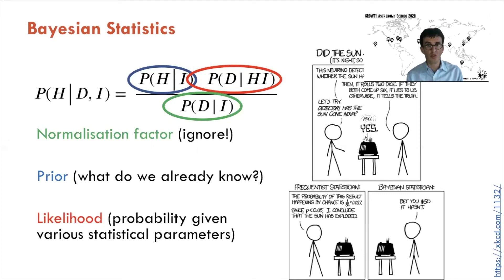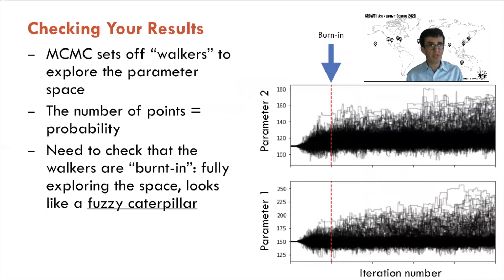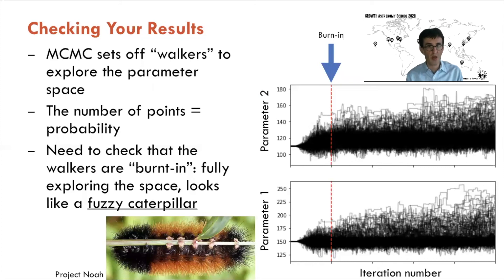When doing MCMC fits there are pitfalls. MCMC sets off different walkers to randomly explore the parameter space, and the number of points in the resulting posterior is proportional to the probability of that parameter being at that value. We need to check that the walkers are burned in — fully exploring the parameter space without being influenced by their starting positions. As a function of iteration number, walkers start at very small ranges but expand. We discard everything before the red line — rejecting burn-in — and only use what remains, which properly samples the posterior.